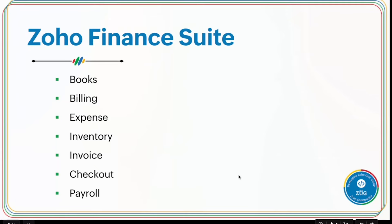At Zoho, we have around seven different applications to cater to finance and accounting related operations of any business. Of these seven products, apart from Checkout and Payroll, for the remaining five products we have a dedicated platform for building extensions. Since Zoho Books has all the functionalities available in the other four products, I'll be referring only to Zoho Books throughout this session.